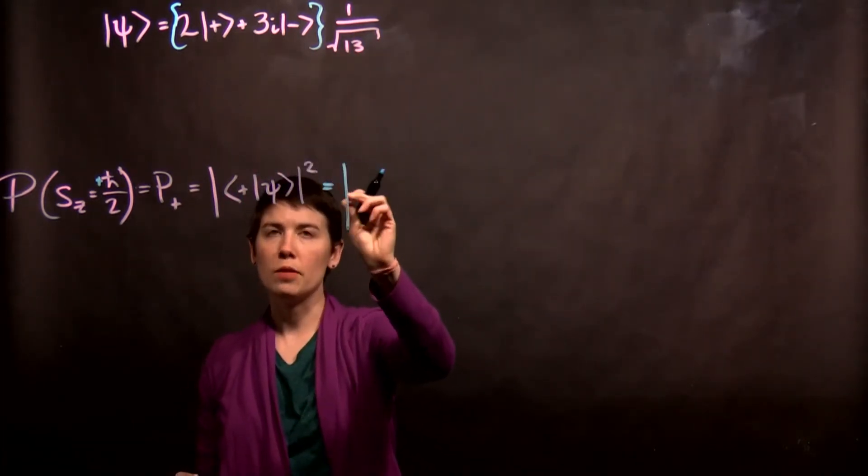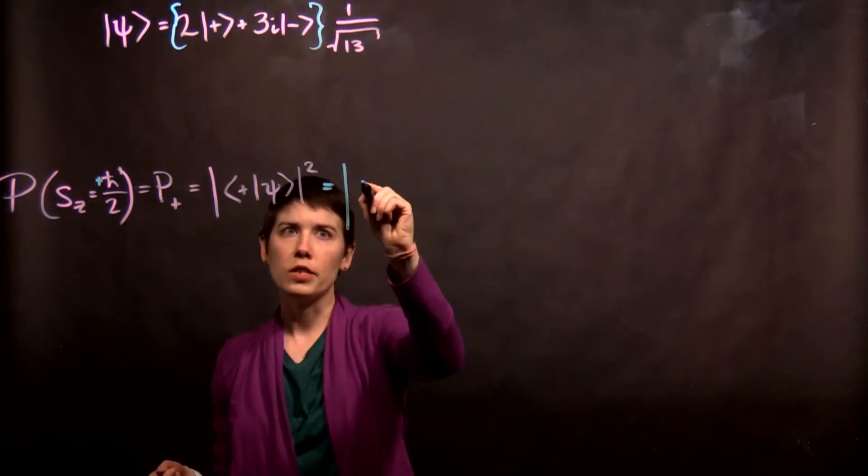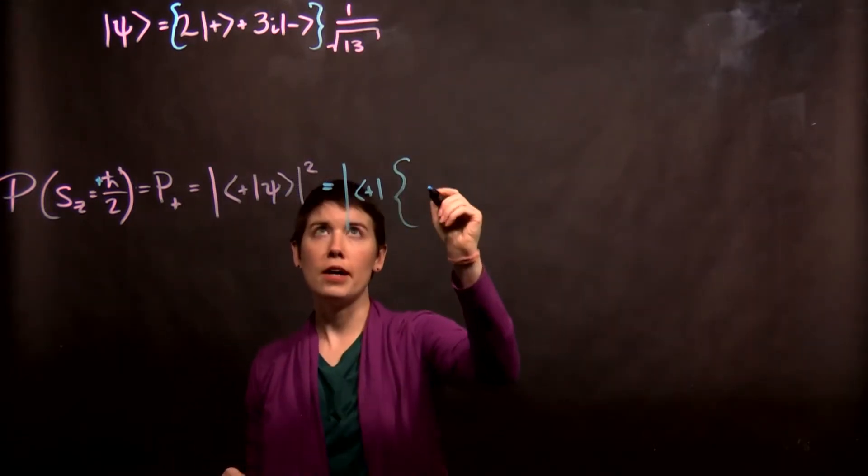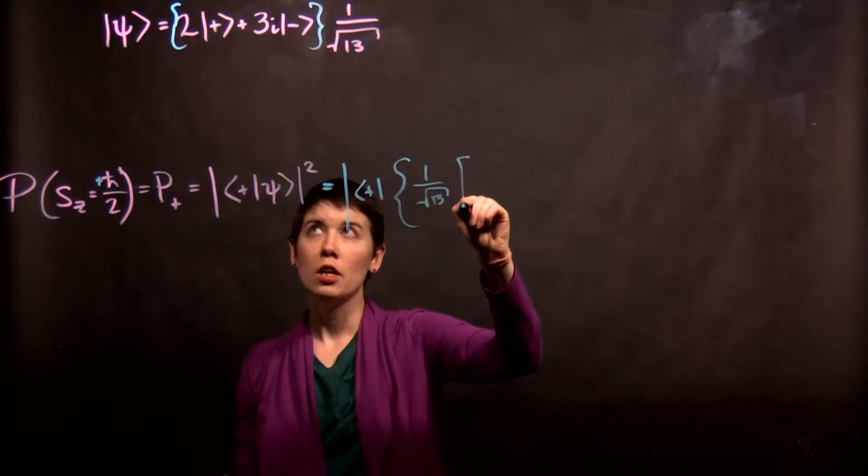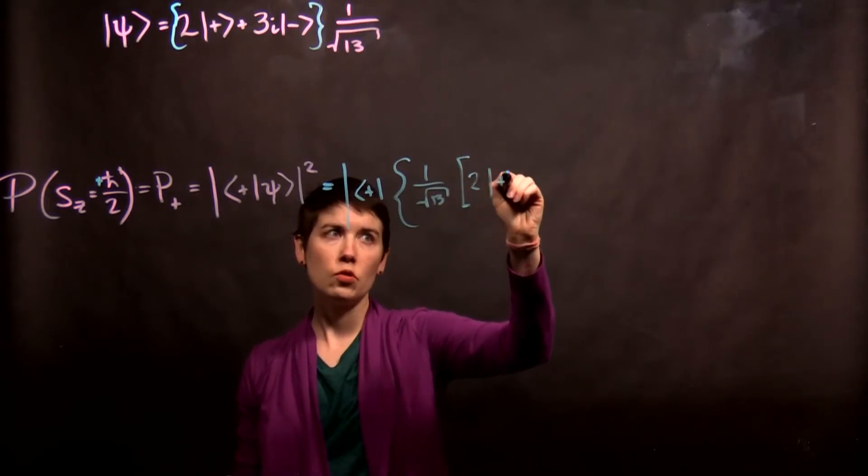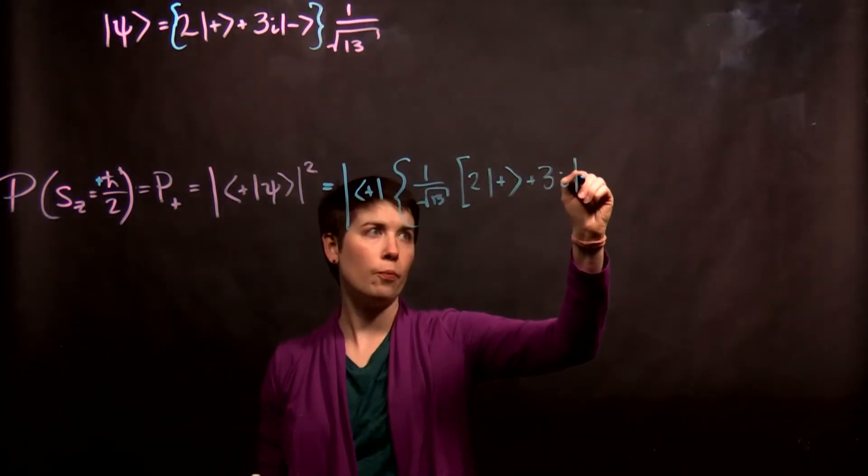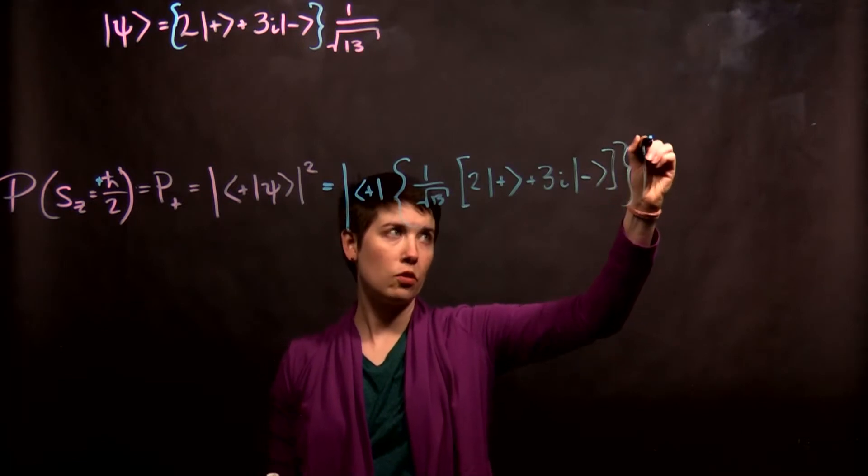Now when I go through, be careful not to lose the magnitude, not to lose the squared. We're going to have spin-up as a bra, and then on the right side we have 1 over square root of 13 from the normalization coefficient, and then we have 2 spin-up plus 3i spin-down, and then we have again magnitude squared.